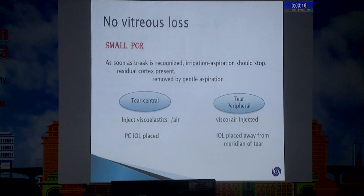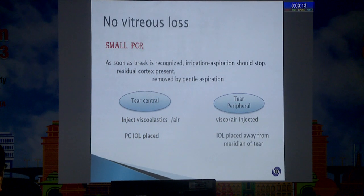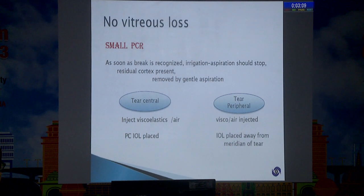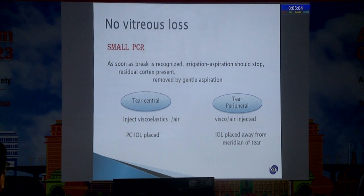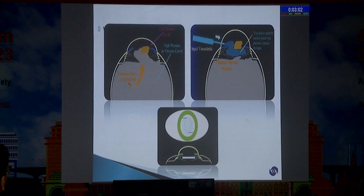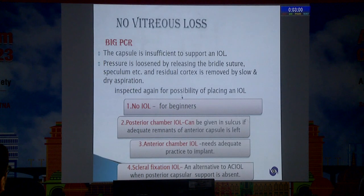If the tear is central, inject viscoelastic — sometimes you can also give under air. If the PCR is placed and the tear is peripheral, see that again with viscoelastic and try to rotate the IOL in such a way that it does not extend the tear.